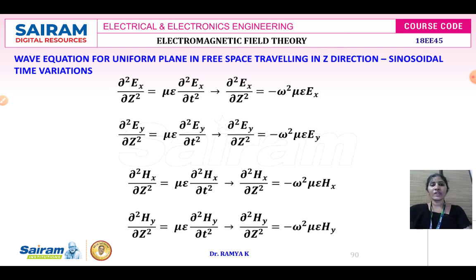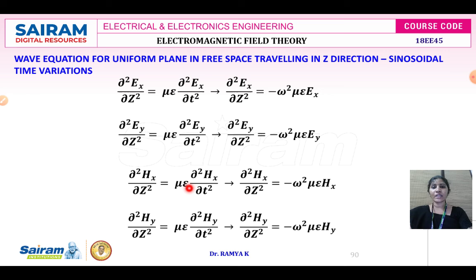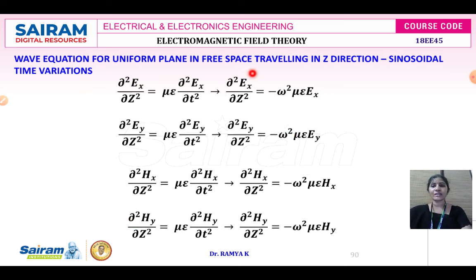We have proved that the electromagnetic waves are transverse in nature — with respect to one axis, the field is orthogonal to the direction of the propagated wave. When the wave propagates along x-axis, the equation is dou squared E by dou x squared; along y-axis it is dou squared E by dou y squared. This is the wave equation for the uniform plane wave in free space traveling in z-axis direction for sinusoidal time variation. Thank you students.